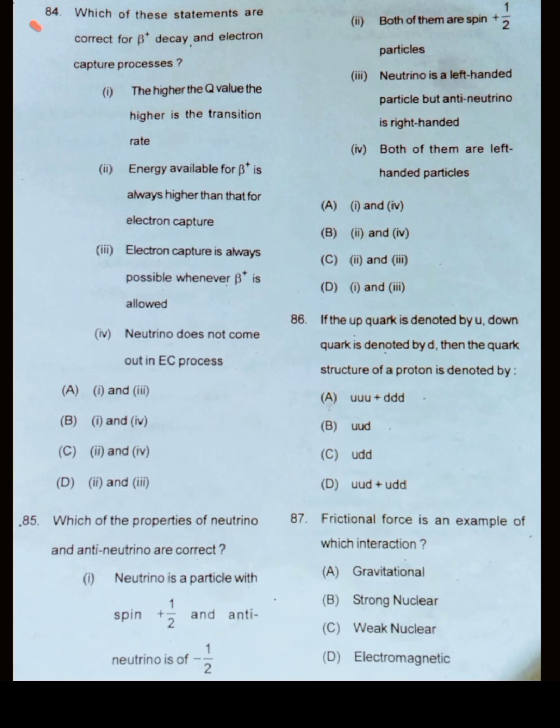In question number 84, which of these statements are correct for beta plus decay and electron capture process? The higher the Q value, the higher is the transition rate. This is always true.